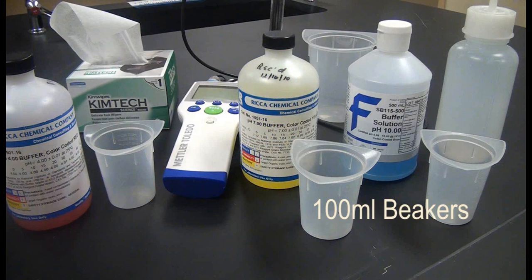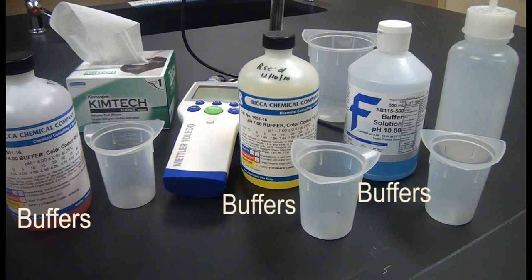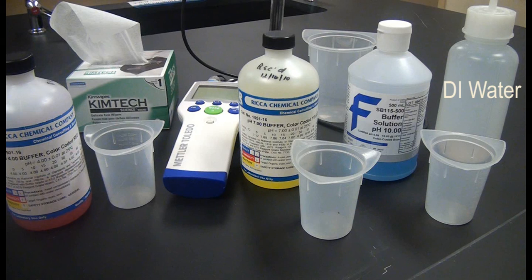A pH meter, small plastic beakers, pH buffer solutions, a 1 liter DI water bottle, a 250 ml waste container or beaker, and a supply of chemiwipes.